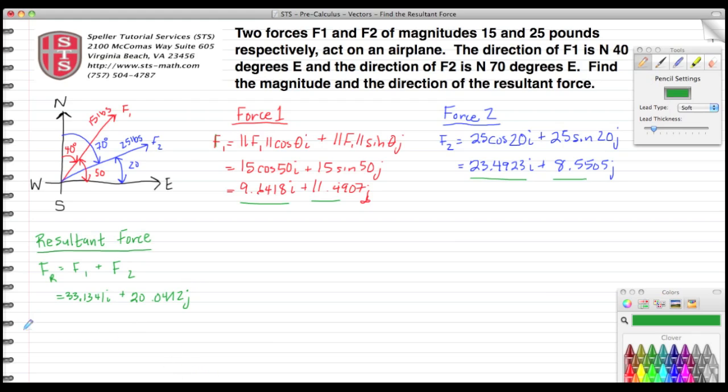Now that I have those two components, I can now figure out what the magnitude of this vector is. So the magnitude of F sub R would be the square root of the i component squared plus the j component squared. So that's going to be 33.1341—excuse me, let me slow down a little bit so I can get my writing device to work properly—33.1341, and I'm going to square that.